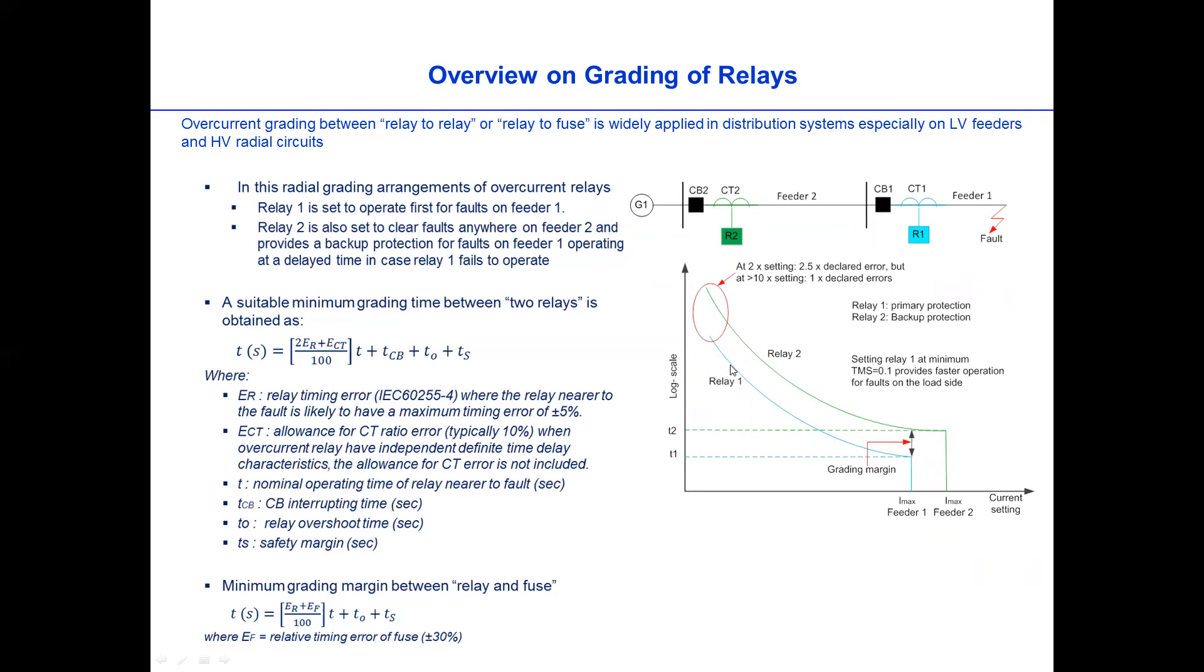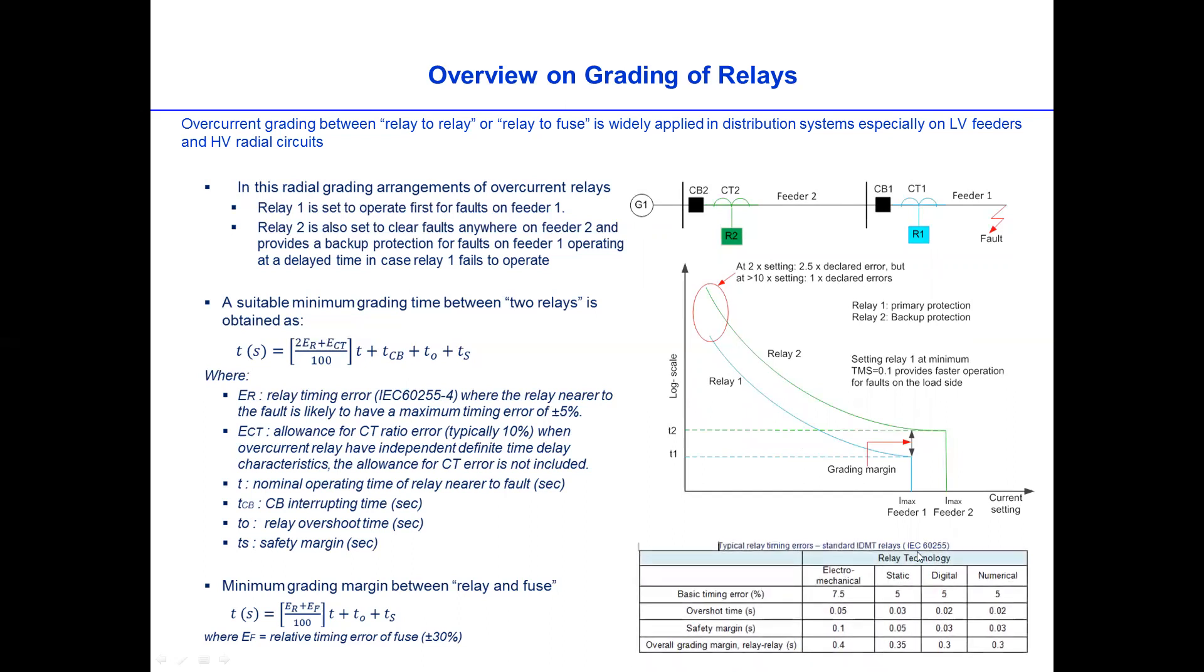So if we look at this one, this is relay 1 trip time and this is relay 2 trip time. So relay 2 is normally delayed or operates at a delay time compared to relay 1. And then this is the minimum gradient time between two relays is obtained using this equation. So this is the relay gradient margin. We can calculate between these two relays. If it was fused relay, then we can use this equation. Of course, according to the IEC 60255, we can plug in this parameter. So the overall grade margin between two relays, when it is relay to relay is 0.4 second or 400 millisecond and 300 millisecond when relay to AC fuse.